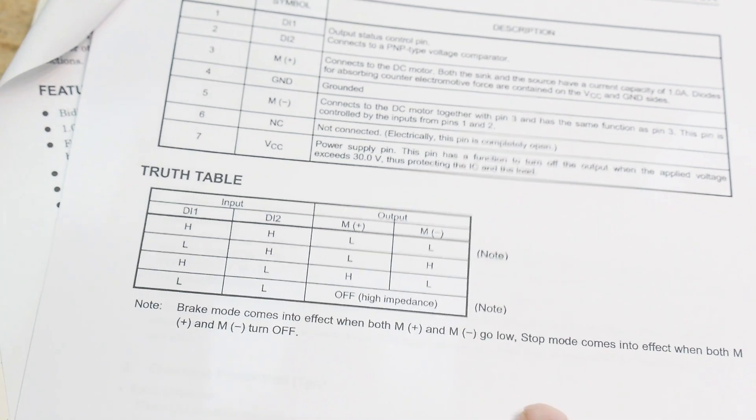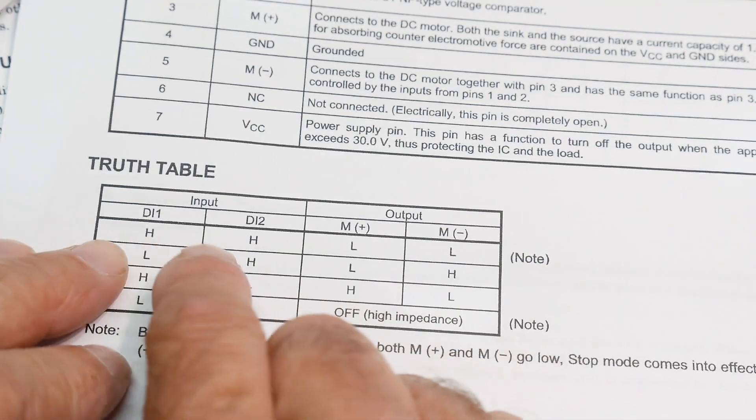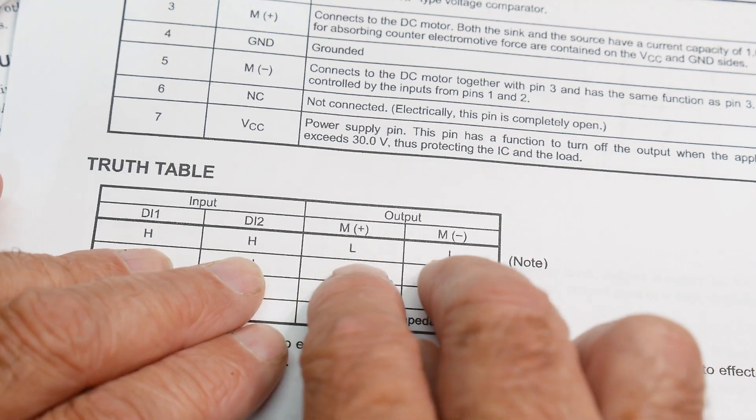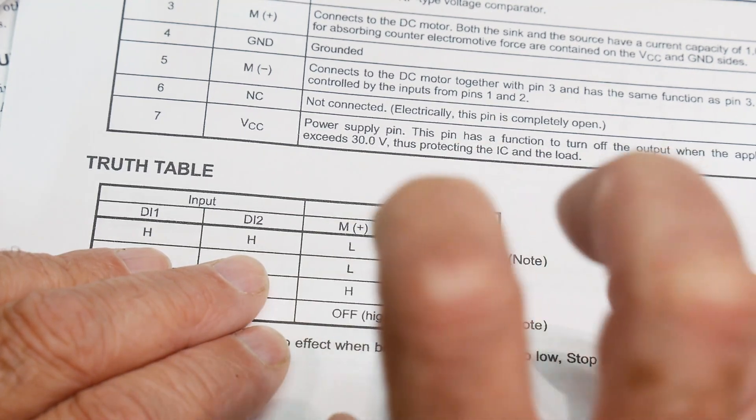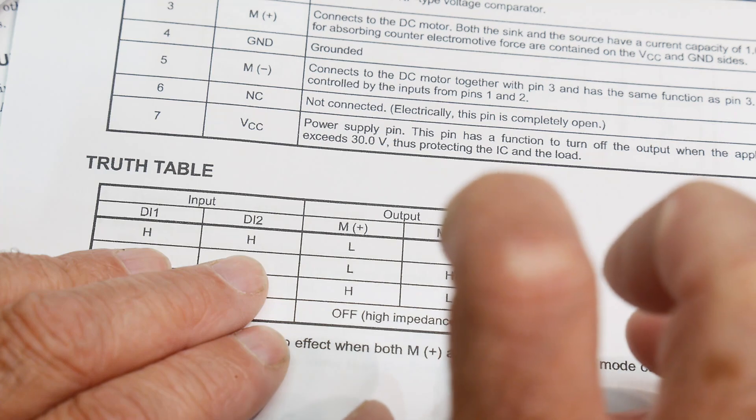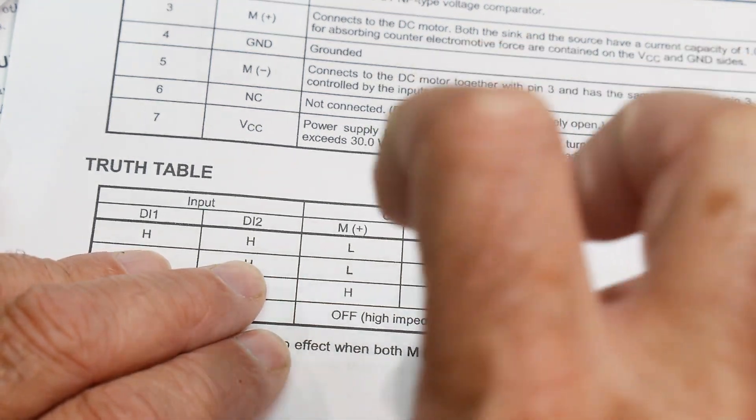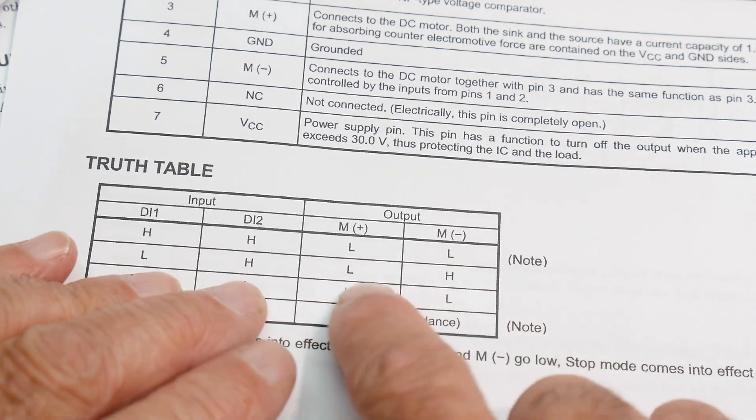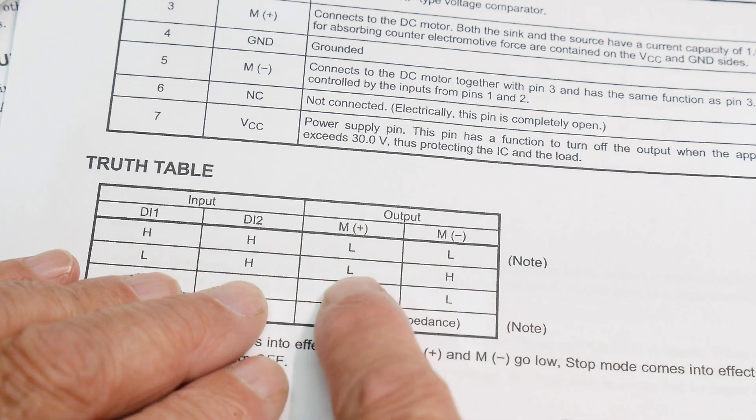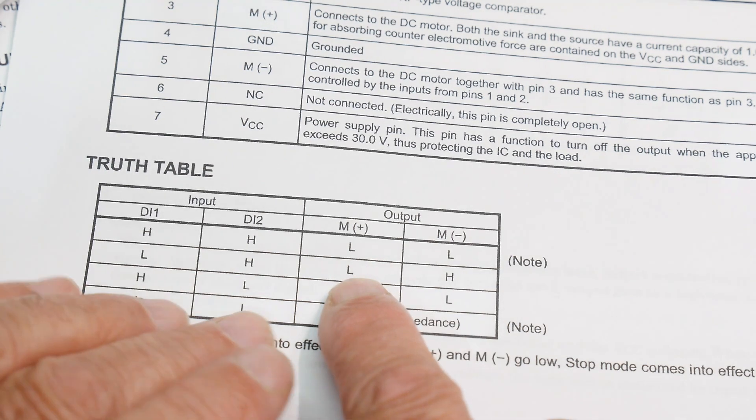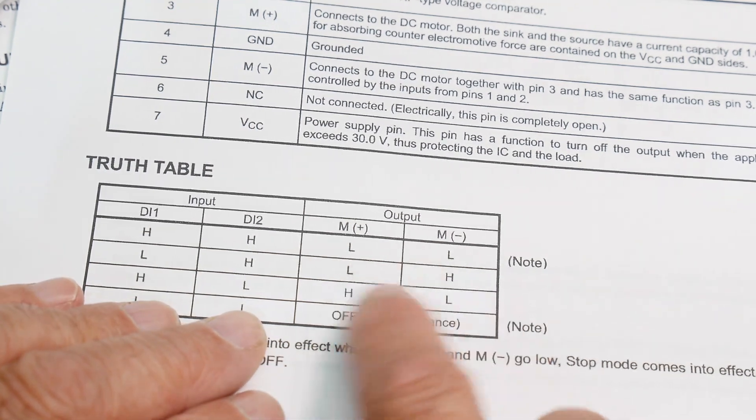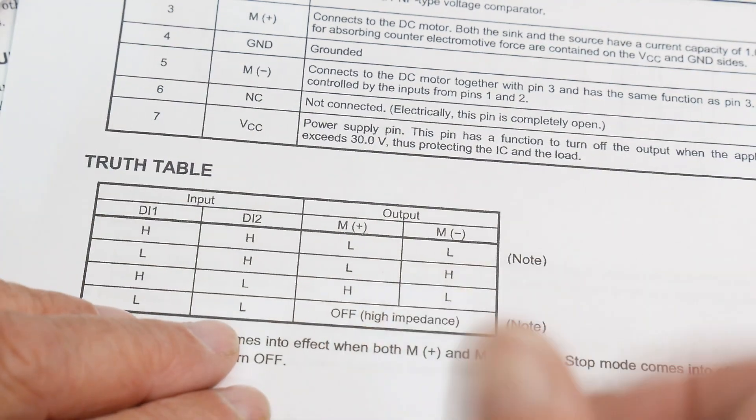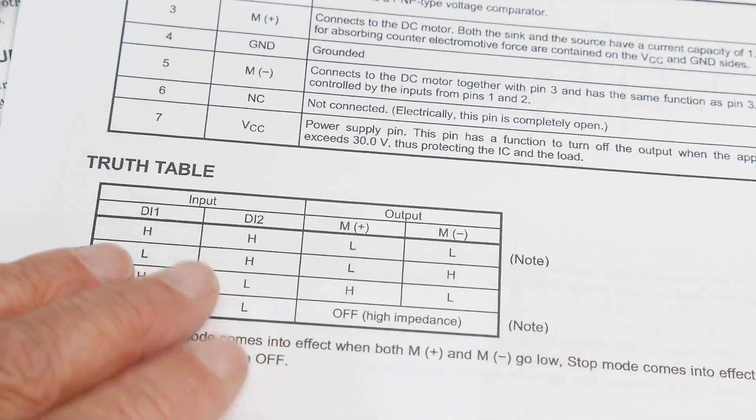So the truth table looks like this. If they're both high, then it energizes both of them at the same time and it puts it into a kind of a lock mode. It's not going to go anywhere but it's held with electricity so it's kind of firm. If you go low high then it's going to go plus minus, and then if you go high low it's going to go minus plus. And then if you go low low it says high impedance, it just turns that bridge off so the motor can spin freely. So it's really easy to hook up.